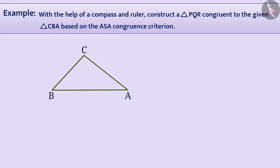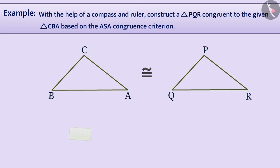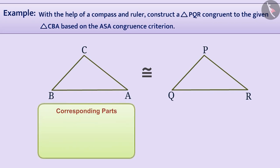First, we draw a rough diagram of triangle CBA and triangle PQR which are congruent to each other. From the given figures, we can observe the following correspondence: C corresponds to P, B corresponds to Q, A corresponds to R, and CB corresponds to PQ.